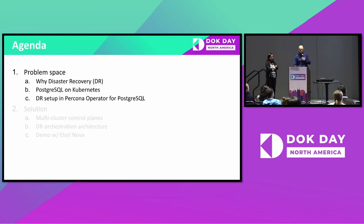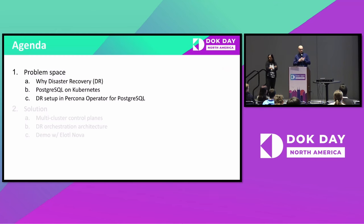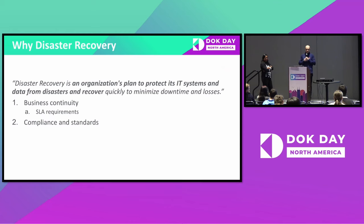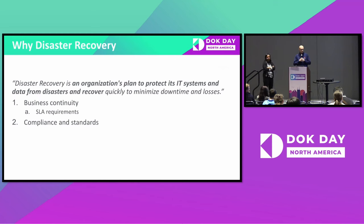The agenda for the problem space covers a quick recap of why you'd want disaster recovery, then a jump into Postgres on Kubernetes and the specific problems DR brings in that context. Disaster recovery is a plan for how you protect your IT systems from data loss — in the case of databases — or from business failures, and you want to do it quickly. There are usually two drivers: business continuity and compliance.